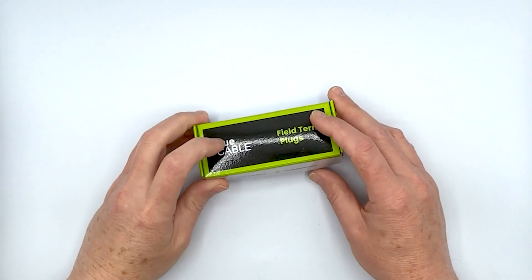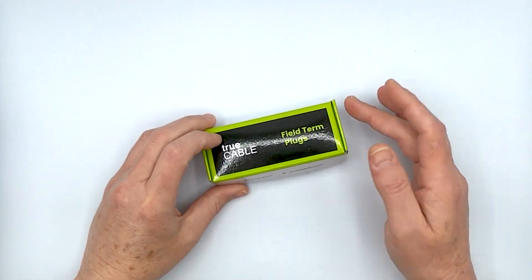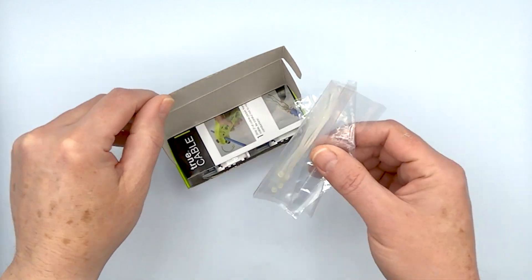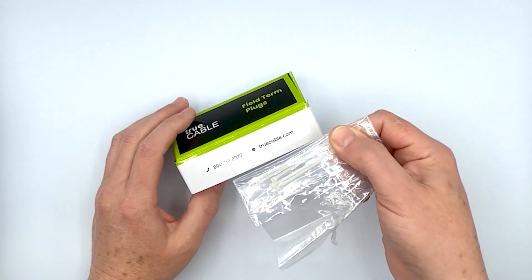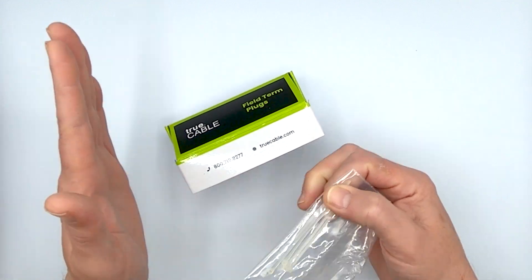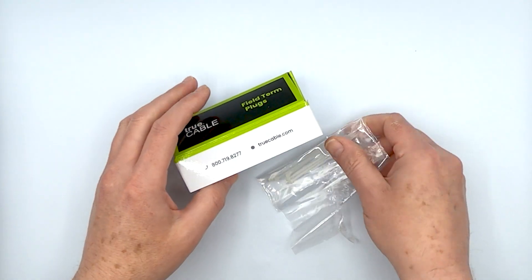Okay, so we've got our field term plugs here. They come in 2, 6 and 12 packs. We'll just quickly do an unbox here. I've already ripped into this little plastic baggie, but it comes with zip ties that will help you keep the cable at a stable angle, depending on how you're terminating it.